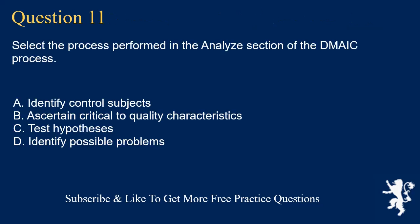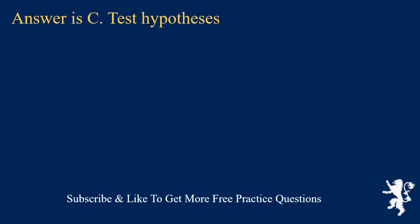Question 11. Select the process performed in the analyze section of the DMAIC process. A. Identify control subjects. B. Ascertain critical to quality characteristics. C. Test hypotheses. D. Identify possible problems. Answer is C. Test hypotheses.